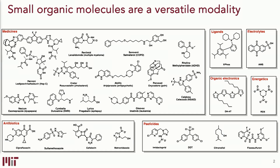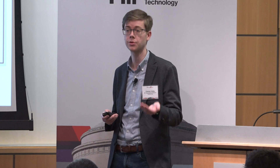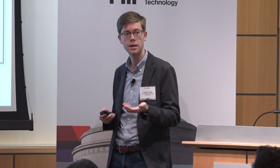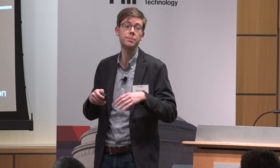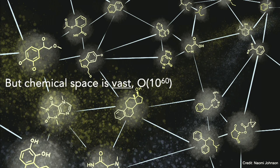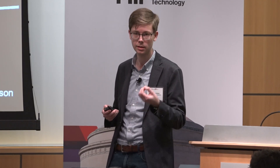What makes Ritalin a good therapeutic intervention for ADHD is very different than what makes DDT a good insect repellent. I like to think about the processes by which we arrive at these structures and how we discover them. One of the reasons why we want to think about AI and computational assistance is because chemical space is huge. This is why we can find structures with such a diverse range of function, and why there's such an opportunity to find new molecules as therapeutics, among other applications.